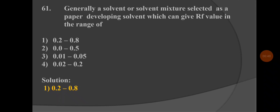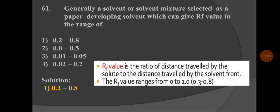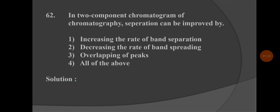The correct answer is option 1: 0.2 to 0.8. This is the range of RF value of a solvent or solvent mixture used in paper chromatography for paper developing solvent. The RF value is the ratio of distance traveled by the solute to the distance traveled by the solvent front, and the RF value ranges from 0 to 1, or more accurately from 0.3 to 0.8.